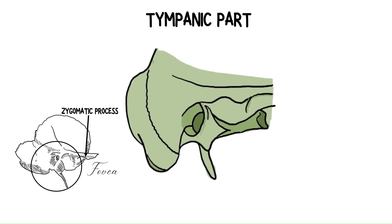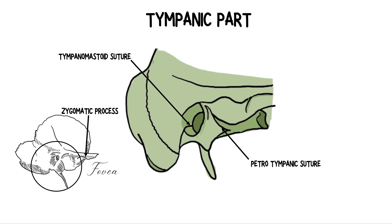The zygomatic process articulates with the temporal process of the zygomatic bone to form the zygomatic arch. Below the origin of the zygomatic process is the tympanic part, which has three sutures. The tympanomastoid fissure is one of the intrinsic fissures of the temporal bone, located parallel and posterior to the bony external auditory canal, dividing the tympanic part and the mastoid process. It gives passage to the auricular branch of the vagus nerve, Arnold's nerve, from the middle ear to the preauricular soft tissues. The petrotympanic fissure, also known as the squamotympanic fissure or the Glaserian fissure, is a suture in the temporal bone that runs from the temporomandibular joint to the tympanic cavity. The tympanosquamous fissure separates the tympanic part of the temporal bone from the squamous part; it is parallel and anterior to the bony external auditory canal and divides medially into the petrotympanic fissure and the petrosquamous fissure.